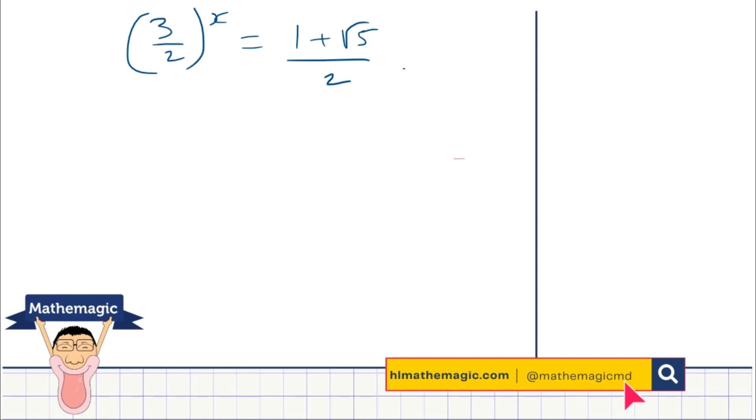And so substituting 3 over 2 to the power x for u, we can say 3 over 2 to the power x equals 1 plus root 5 over 2. So when you find yourself with a power equation like this, the best thing you can do is use ln or log. In this case, we're going to use ln. No personal preference, it's just something that is more commonly used.